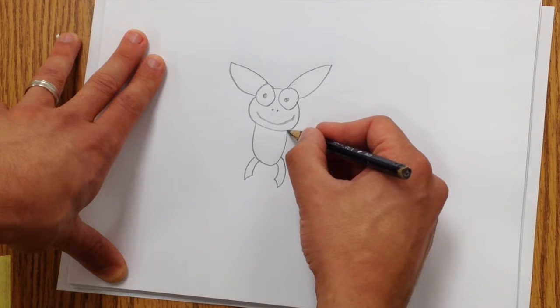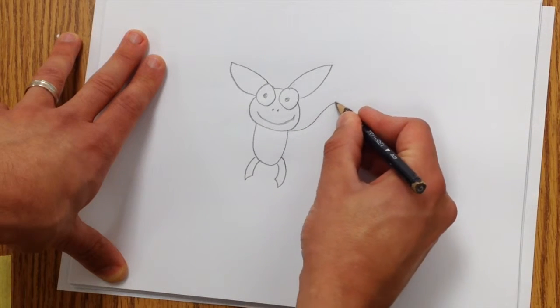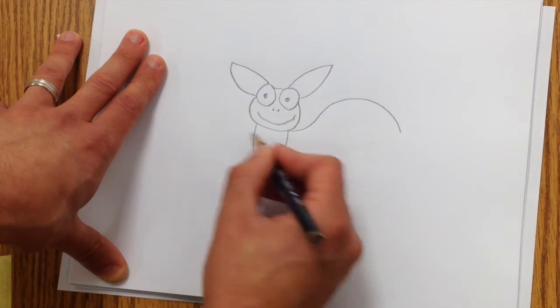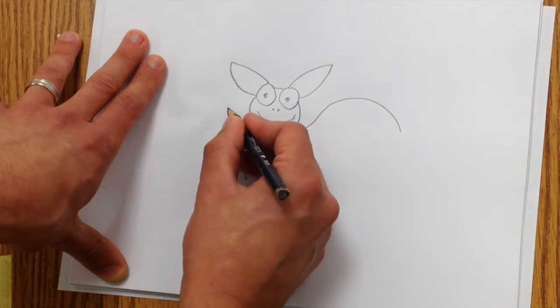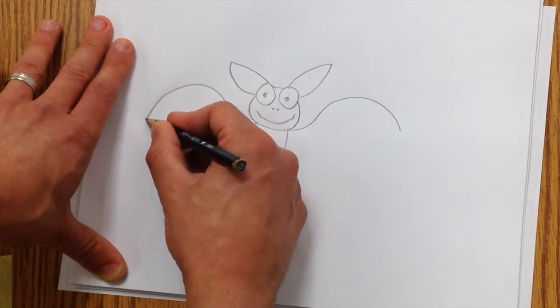And now we're going to arch up for the wing and then curve over. Arch up and curve over, kind of like a rainbow.